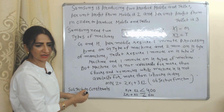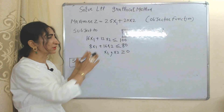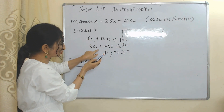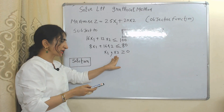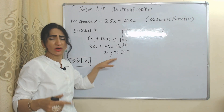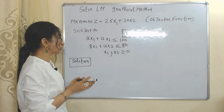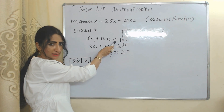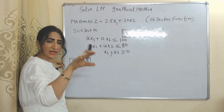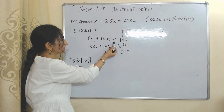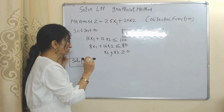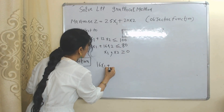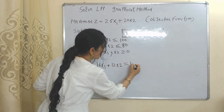I will solve this linear programming problem with the graphical method. This is our objective function, subject to these two constraints, and we assume x1 and x2 are greater than or equal to 0 — obviously a firm can't produce negative quantities. Here you can see the constraints are in inequality form. As we discussed earlier, constraints can be equalities or inequalities. So first we will convert the inequalities into equalities.